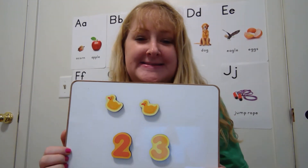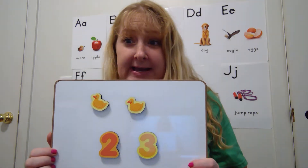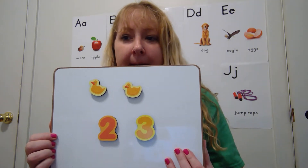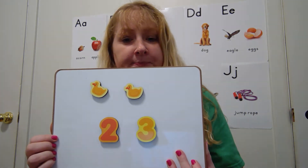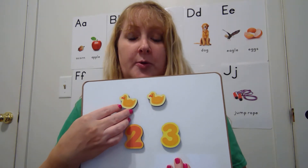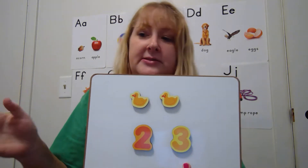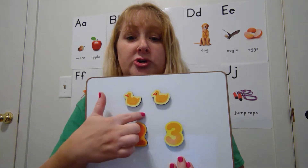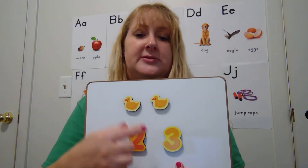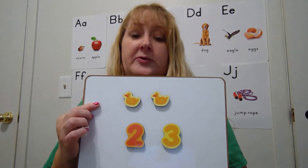Hi friends, for our math lesson today we are going to subitize. And subitizing means when you tell me how many of what you see without counting them. So we want to eventually get to where we can look at something and just say that's two, that's three, that's four, by just looking at the objects and not having to count them one by one. So that is a tricky skill that we will eventually get to.